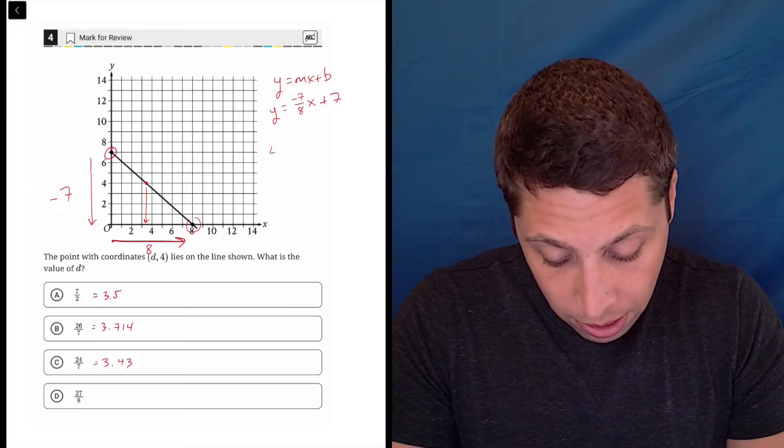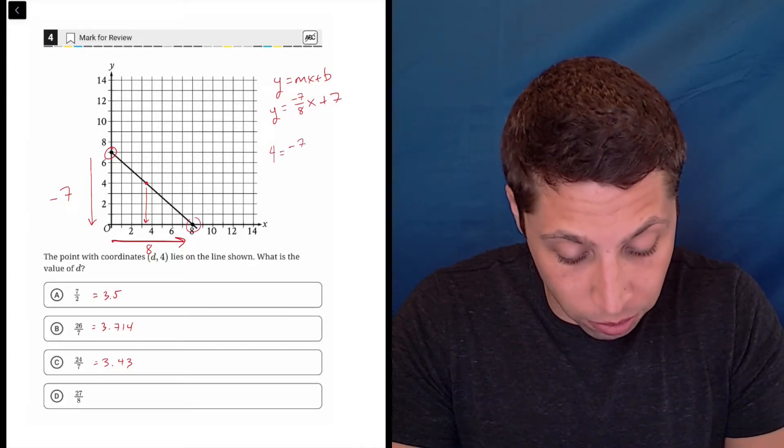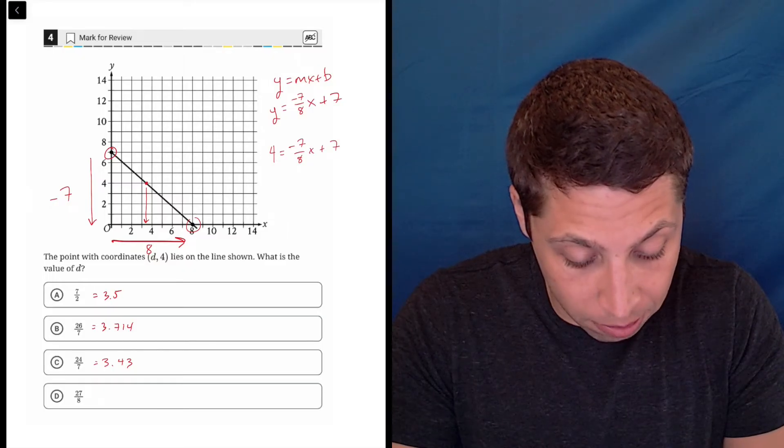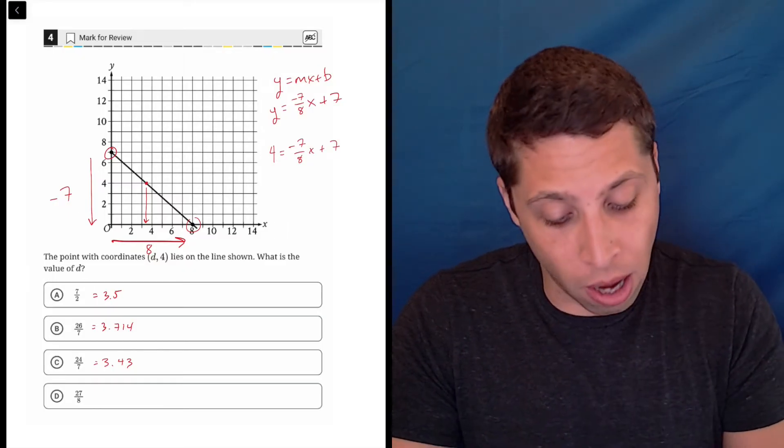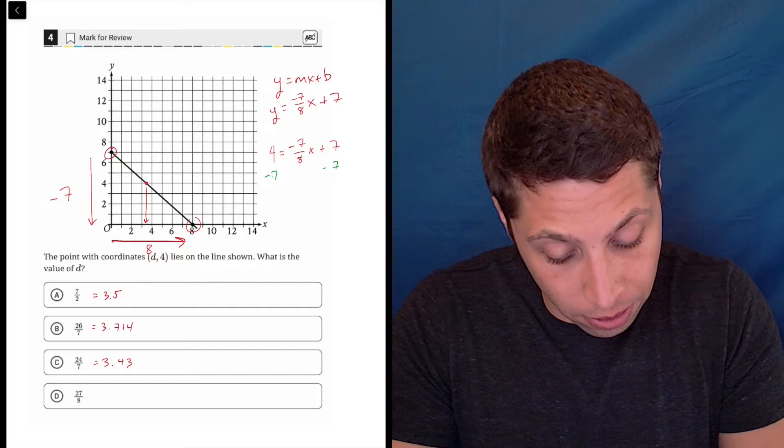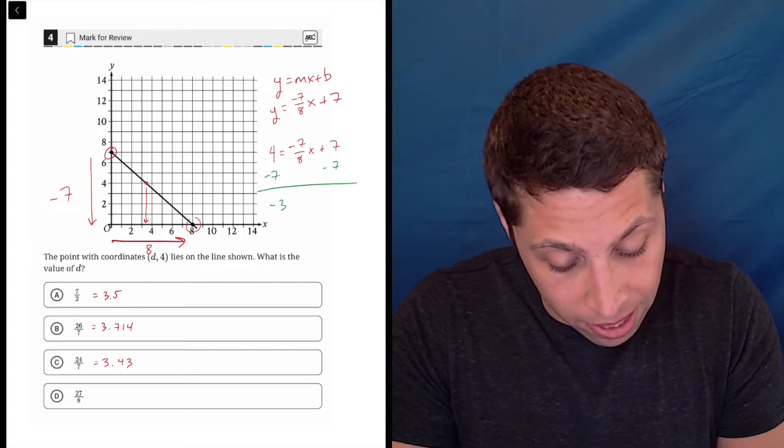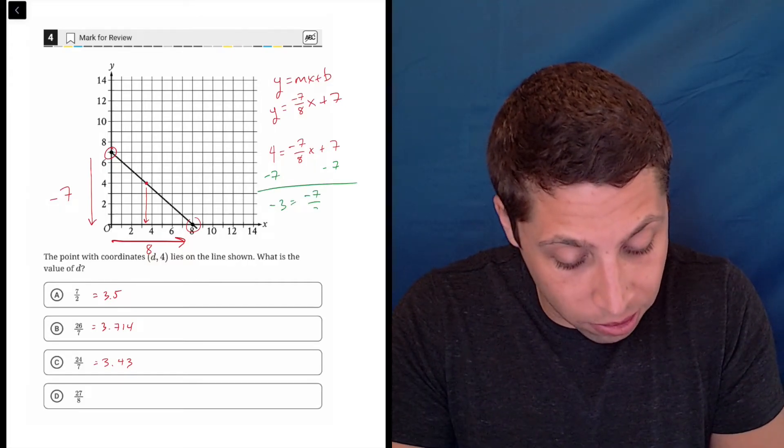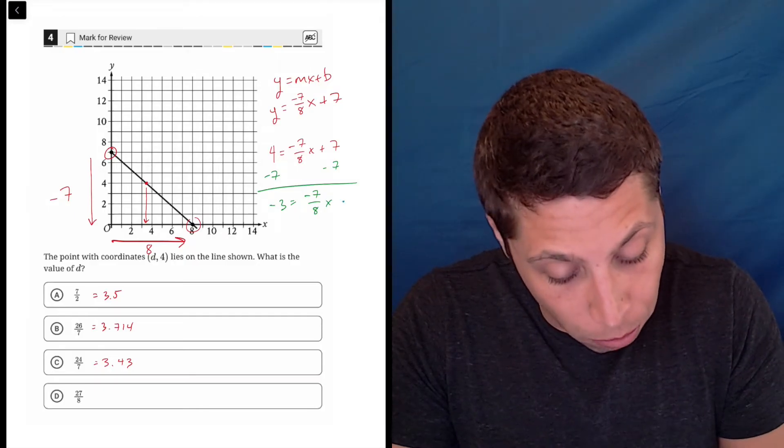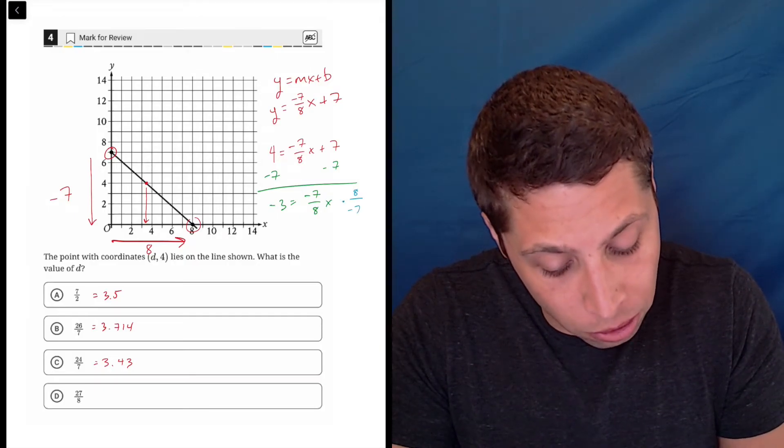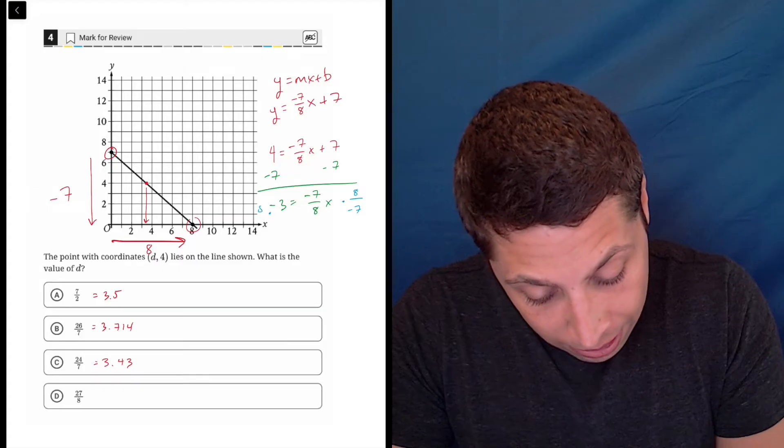But we've got four is the y-coordinate, so negative seven eighths times x plus seven. So now I'm just gonna solve for x, so minus seven. So that's negative three is equal to negative seven eighths times x. Then I'm going to multiply both by the reciprocal, so eight over negative seven.